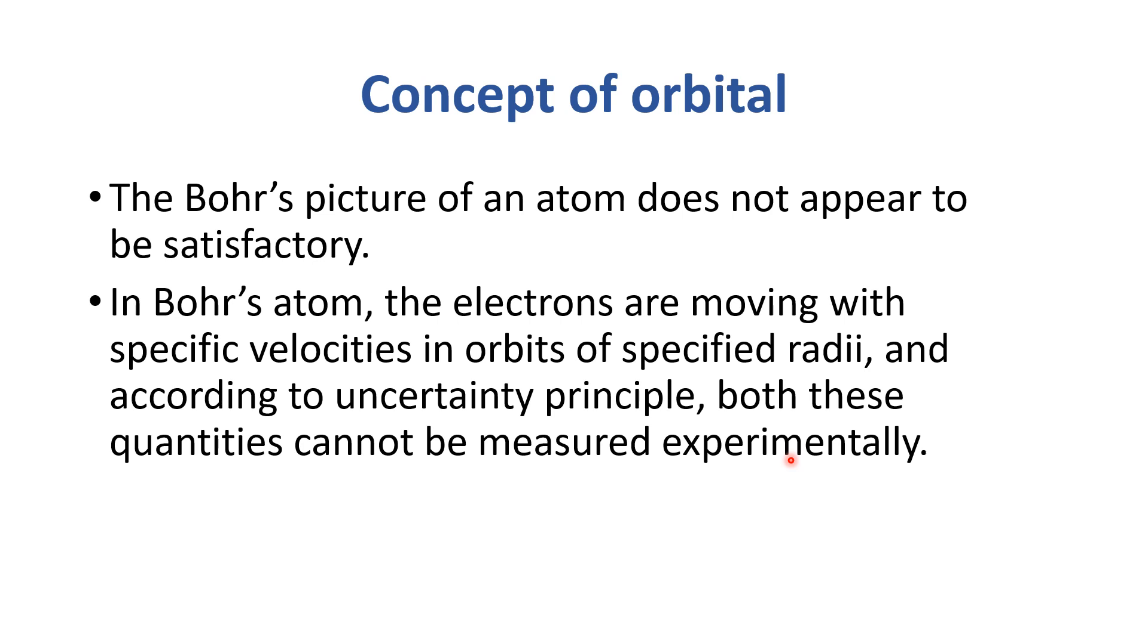Bohr told us that electrons in specified radii with specific velocities will move. But Heisenberg said that we cannot measure two quantities at a time experimentally. If we want to find out the position of electrons, then we compromise the velocities. If we want to measure the velocity, then we compromise the distance and position.